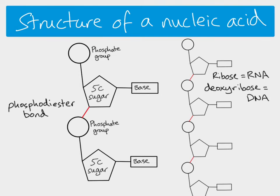In RNA, the pentose sugar is ribose, and in DNA the pentose sugar is deoxyribose. There is another difference in terms of the bases, but for now that's all we'll look at. The nucleotides are essentially the same, just ribose or deoxyribose depending if it's RNA or DNA.